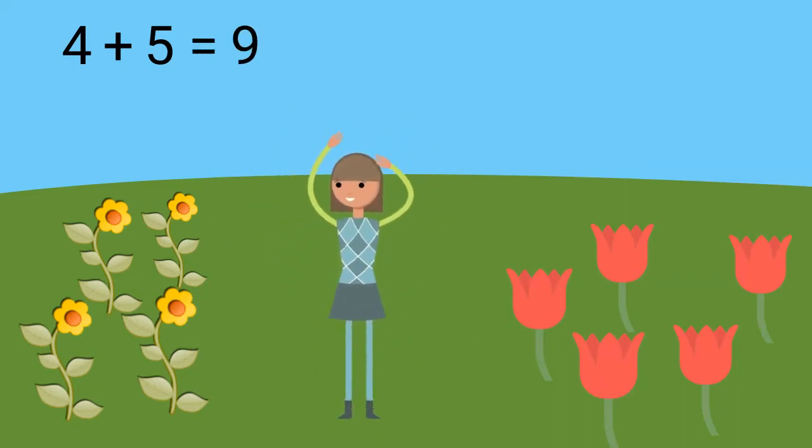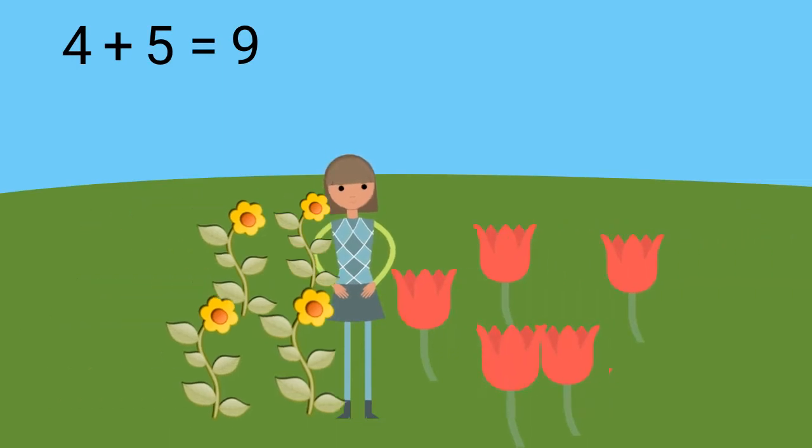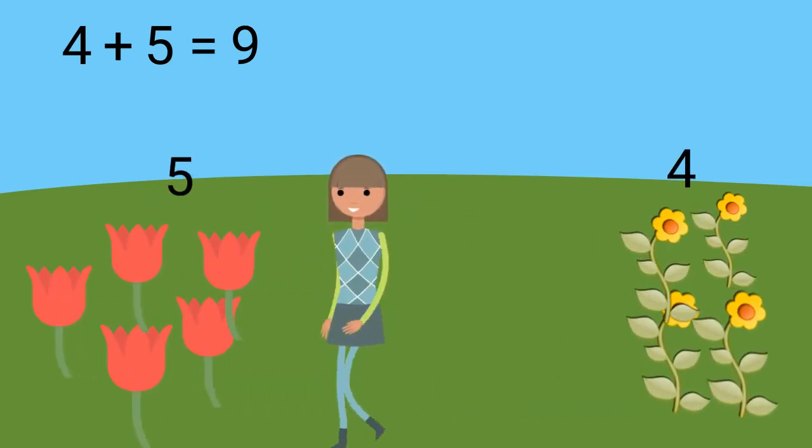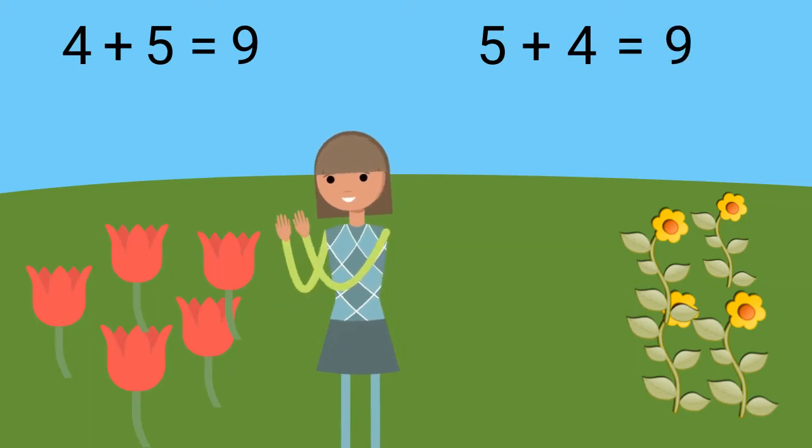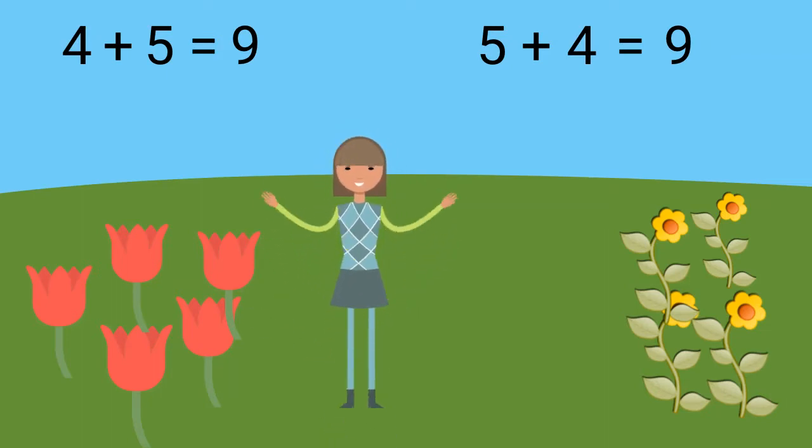When we use the commutative property, we will move around the numbers. Instead of 4 plus 5, we will add 5 plus 4. What is the sum? You got it! Both 4 plus 5 and 5 plus 4 equal 9. All we did was switch the places of the 5 and 4 in the problem.